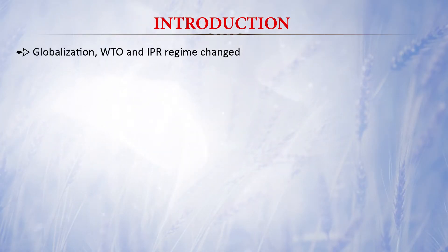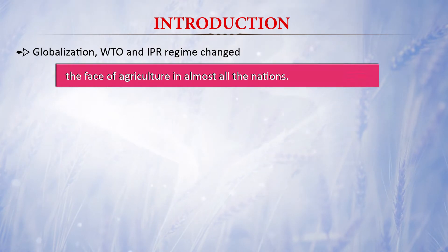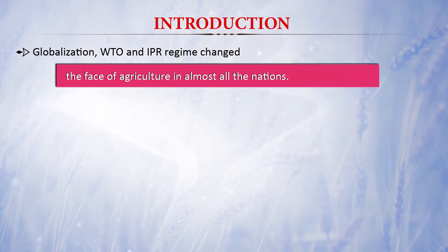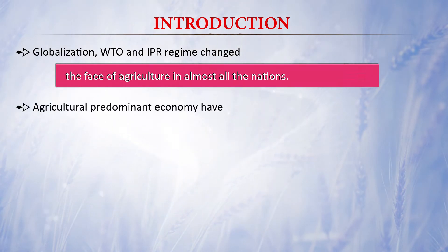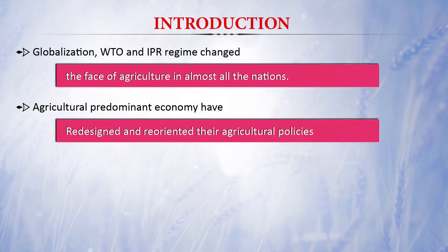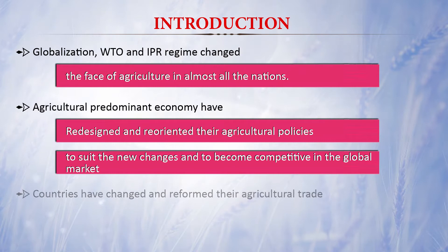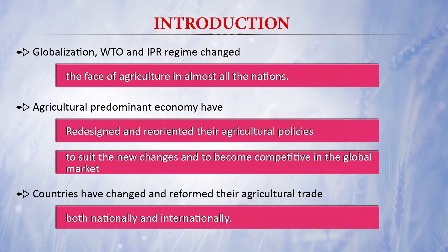Globalization, the World Trade Organization, and intellectual property rights regimes have changed the face of agriculture in almost all nations. After globalization, every country wants to produce output using less input. Agricultural-predominant economies have redesigned and reoriented their policies so that the agriculture sector becomes competitive in the global market, and developing countries have changed and reformed their agriculture trade policies both in national and international markets.